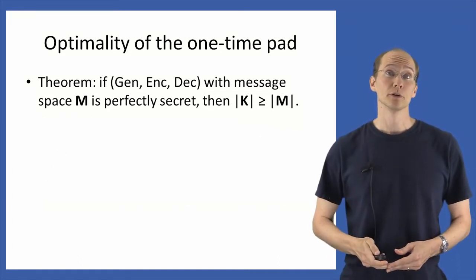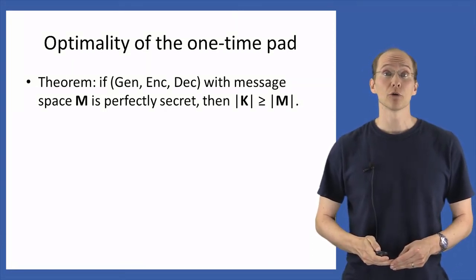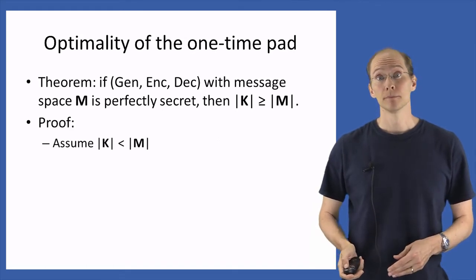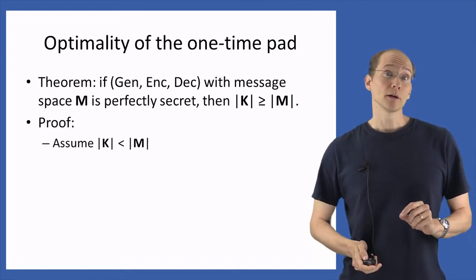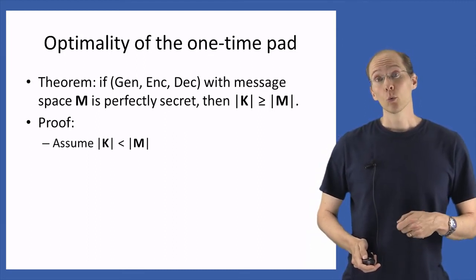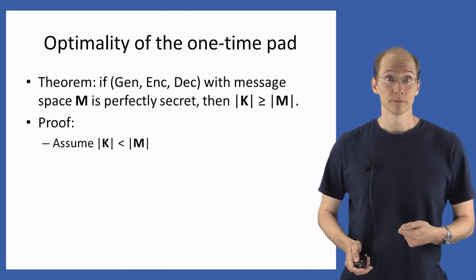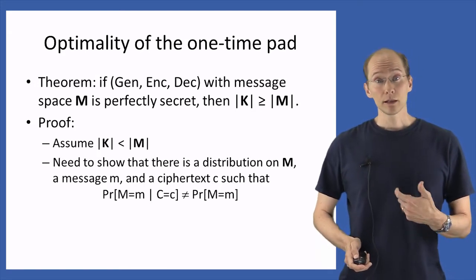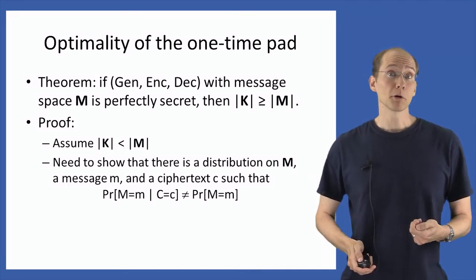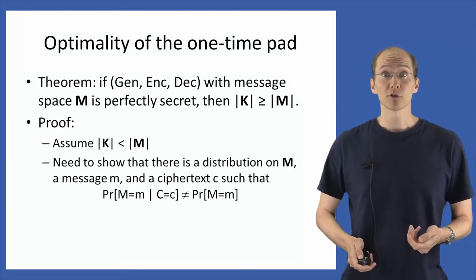Let's turn now to the formal proof. We're given some private key encryption scheme defined by algorithms Gen, Enc, and Dec, with message space M. Let's assume that the key space is smaller than the message space. We'll argue that this implies the scheme cannot be perfectly secret. To show the scheme is not perfectly secret, we need to show some distribution over the message space, some message m, and some ciphertext c, such that the probability that the message is m conditioned on observing ciphertext c is not equal to the a priori probability that the message was m.